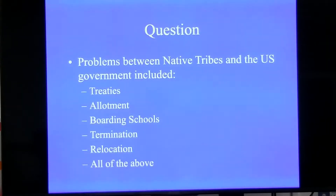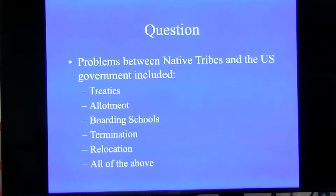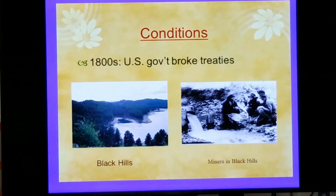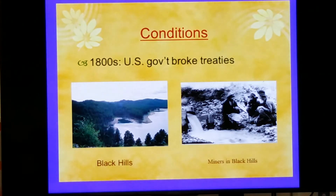First question: problems between Native tribes and the United States government included which of the following — A, treaties; B, allotment; C, boarding schools; D, termination; E, relocation; or F, all of the above? Broken treaties: the United States government broke somewhere around 370 treaties that they signed with Native Americans or American Indians throughout our history.